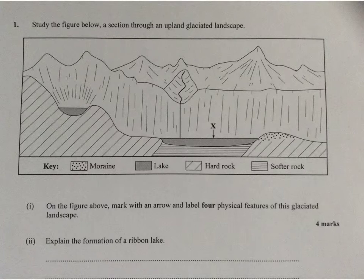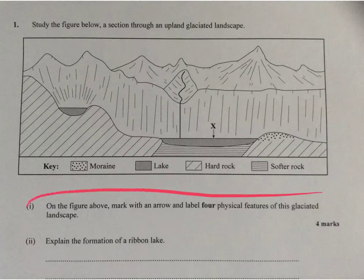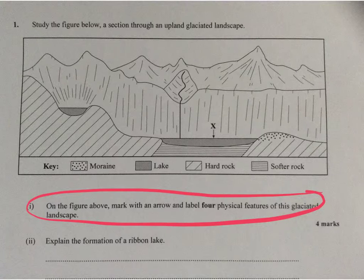Here we have an exam question from a previous GCSE, and you can see that the first question is actually asking you to mark a number of physical features of this glaciated landscape. This question here is looking for you to identify four features.